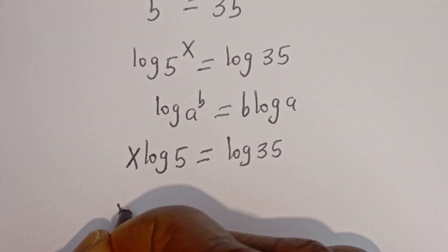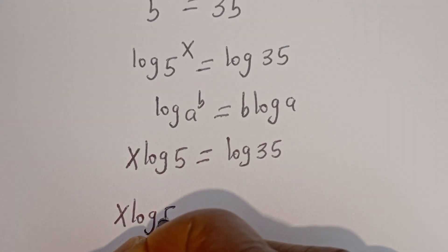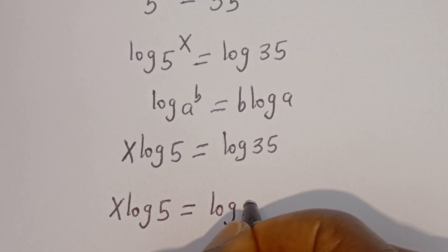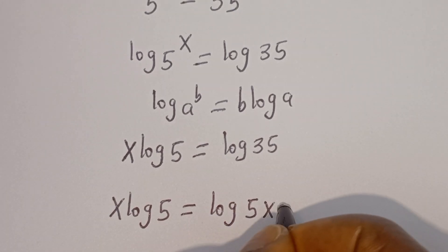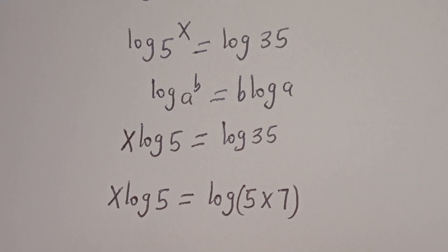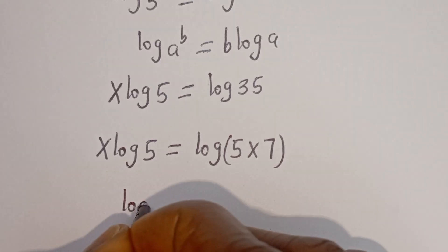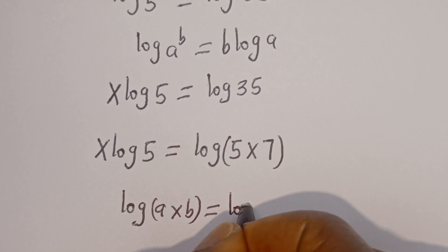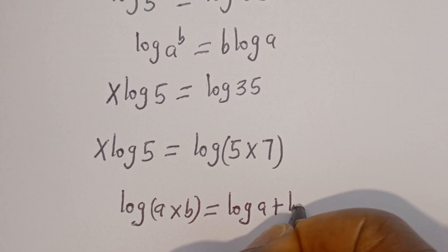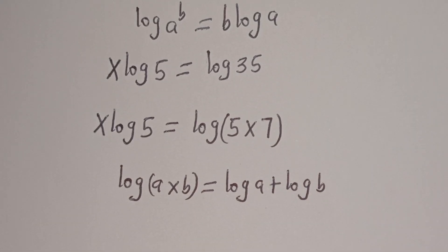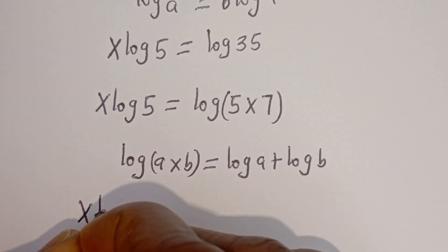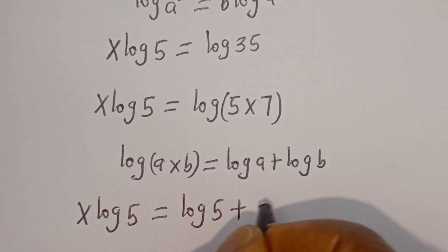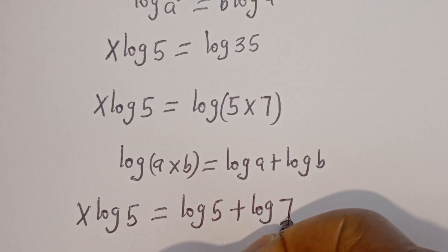This can be written as X log 5 is equal to log 35. Then X log 5 is equal to log 35. This can be written as log of 5 multiplied by 7. Then if you have log A multiplied by B, this is equal to log A plus log B. So X log 5 is equal to log 5 plus log 7.